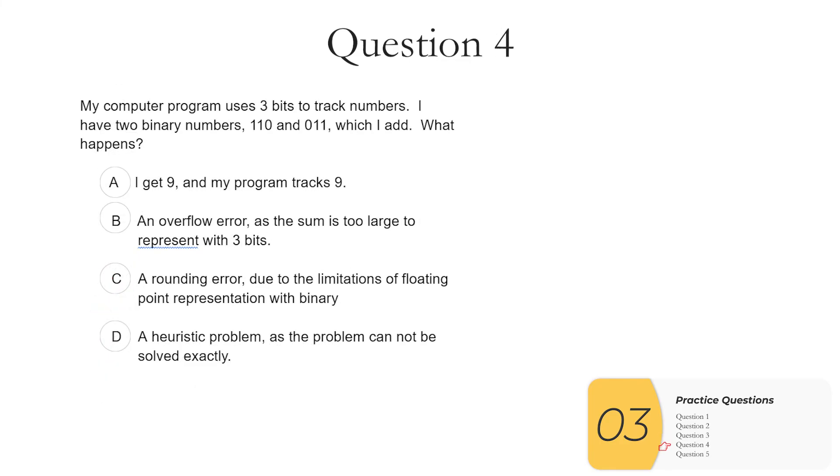Question 4. My computer program uses 3 bits to track numbers. I have 2 binary numbers, 110 and 011, which I add. What happens? Well, this problem is going to make me do some math. So 110 is 6 in decimal, and 011 is 3 in decimal. And when I add 6 and 3, I get 9 in decimal, which is 1001 in binary. But now I have a problem because I only have 3 bits, not 4. So looking at the answers, A, I get 9 and my program tracks 9. I do get 9, but my program can't track that 9 because I don't have enough bits. B, an overflow error. That's exactly what I get. The sum is too large to represent with 3 bits. With 3 bits, I could go from 0 to 7, but not to 9. So the answer is B, an overflow error.